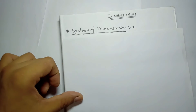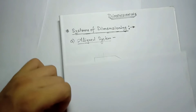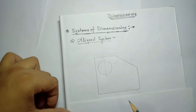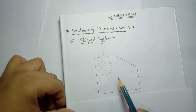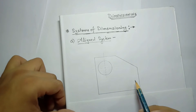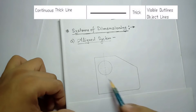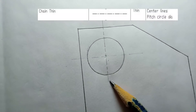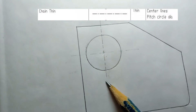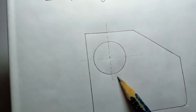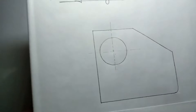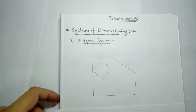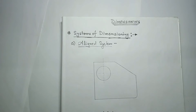There are two systems of dimensioning: the first is the aligned system and the second is the unidirectional system. I have drawn one diagram to represent the aligned system. The shape of the main object is drawn with continuous thick lines. It also has a center line — one long, one short — just to represent the center of the circle, as discussed in the last video. Now we know the elements of dimensioning — we have to take care of each and every element.